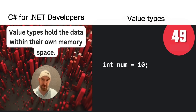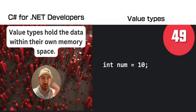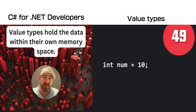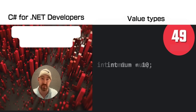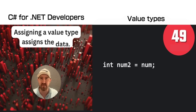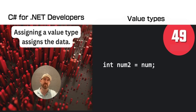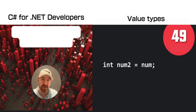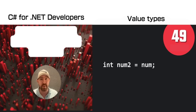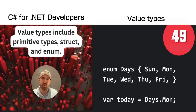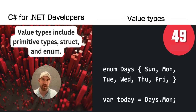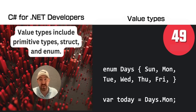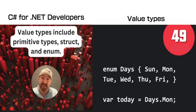Back to basics in C#. Value types hold the data they represent in their own memory space. Assigning a value type to another value type literally copies the data over from one memory space to another. Value types include primitive types, structs, and enums.